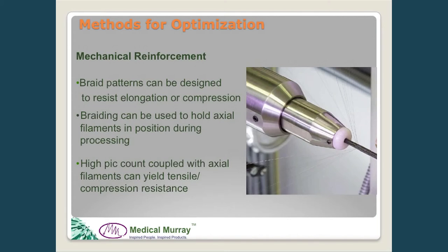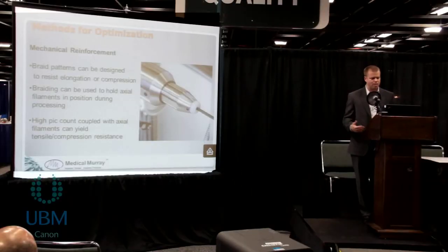Another method for mechanical reinforcement is braid. Braid is commonly used for torqueability within catheters, but in devices with moving components we also need to think about how to design the braid pattern to resist compression and elongation. Braid is also a nice way to hold axial filaments in place — it makes the process repeatable and keeps the filaments straight along the catheter shaft. We can use a combination of braid and axial fibers to achieve both compression and tensile resistance.